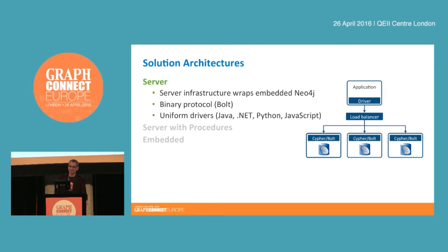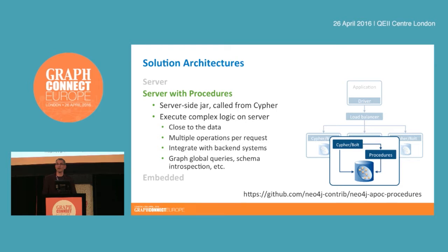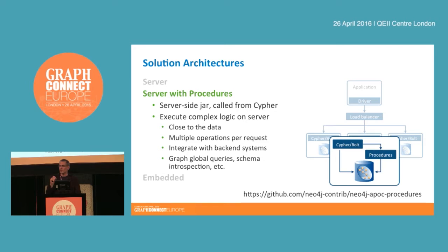Typically you'll also introduce a load balancer so you can load balance requests across the cluster — I'll discuss load balancing issues later. The second option is to extend the server with stored procedures, or extend all servers in your cluster with stored procedures. This is a new feature introduced with 3.0, though those of you who've used Neo4j previously will know of a feature called unmanaged extensions. Stored procedures are effectively those unmanaged extensions plus plus — they allow you to write additional code that sits inside the server and gives you access to the embedded graph database at its heart.